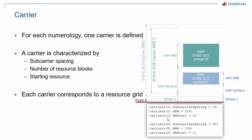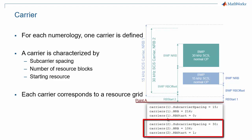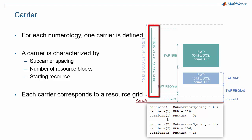It is now helpful to introduce two notions: carriers and bandwidth parts. For each numerology, one carrier is defined. A carrier is characterized by a subcarrier spacing, a number of resource blocks, and a starting resource. To each carrier corresponds an OFDM resource grid. We can see here two examples of how to define carriers in MathWorks 5G Toolbox: one with 15 kHz subcarrier spacing and 216 resource blocks, and one with 30 kHz subcarrier spacing and 106 resource blocks. The larger subcarrier spacing means that 106 resource blocks cover almost the same bandwidth as 216 resource blocks at 15 kHz.